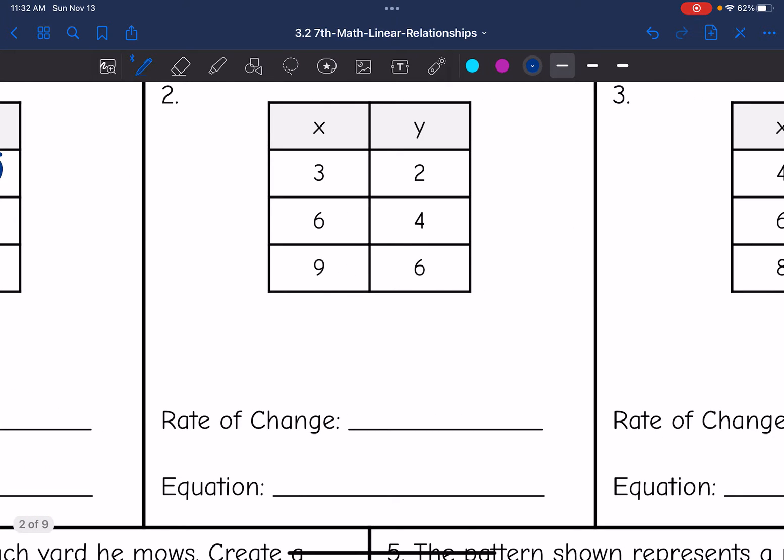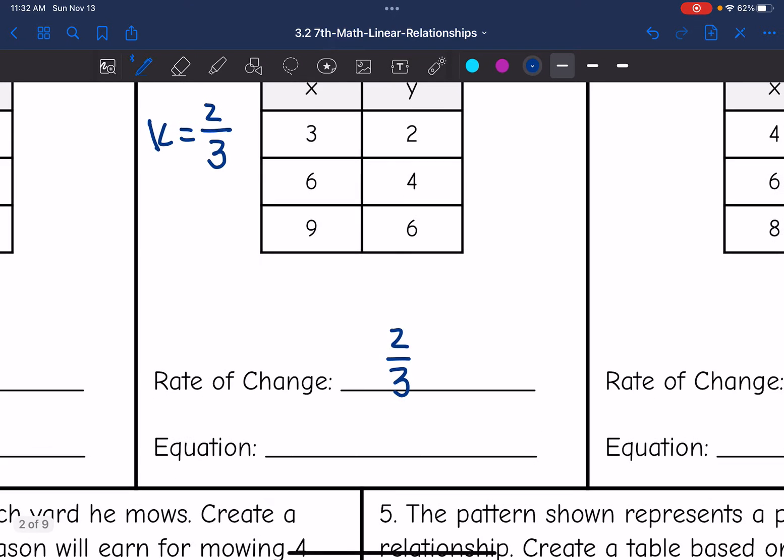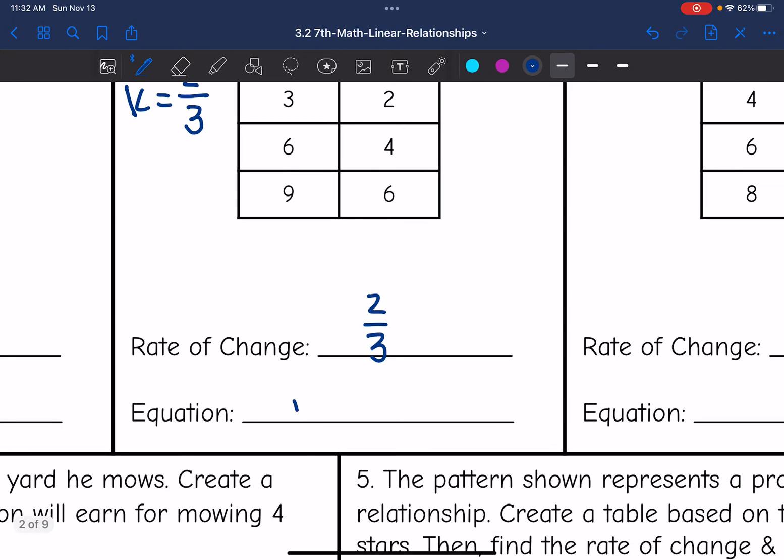Let's look at number two. Same thing to find the rate of change or constant of proportionality, I'm going to do k equals y divided by x, and I'll just use that first ordered pair of 3, 2. So I'll do 2 over 3, and that does not simplify any further. So my rate of change is 2 over 3, and then my equation would be y equals 2 thirds x.